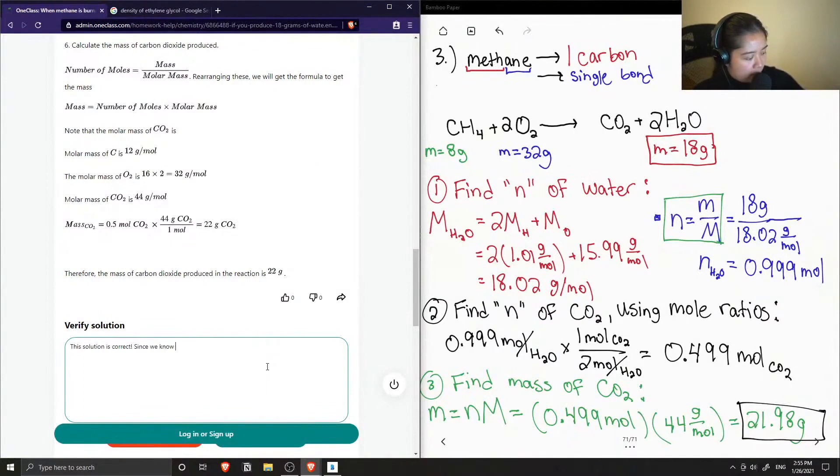Since we know the mass of water produced, we don't have to find the number of moles of CH4 and O2. If we were not given the mass of water, then those values would be useful, and we can determine the limiting reagent as well.